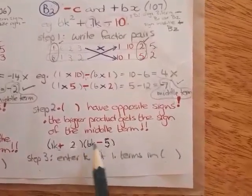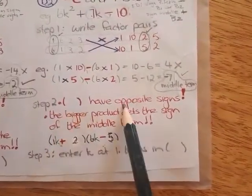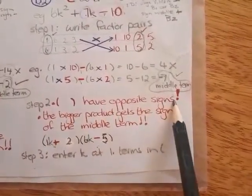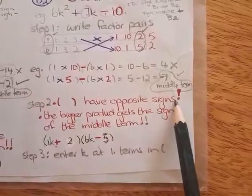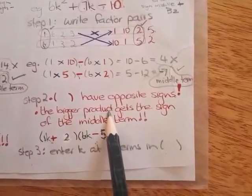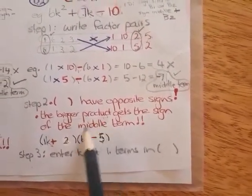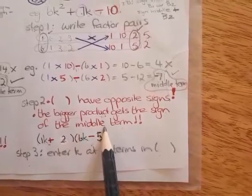Now, remember that the brackets must have the opposite signs. And you will decide that by looking at the bigger product of the two factor pairs. And the bigger product gets the sign of the middle term.